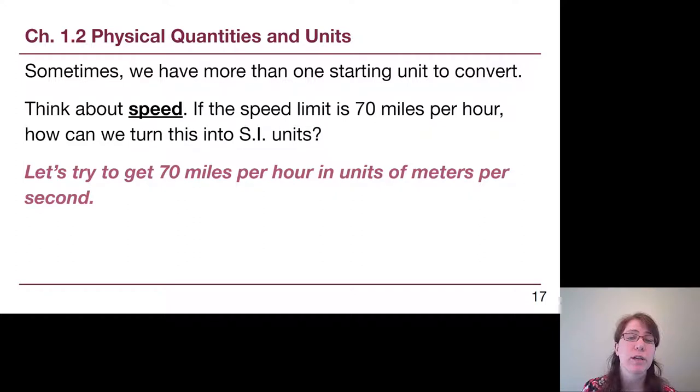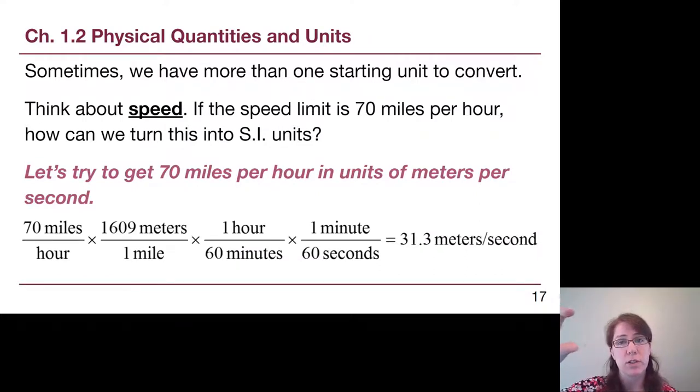The most important thing to point out on this example is that the word per has very specific meaning here. What it means is what we have is a fractional unit. Miles should go on the top of the starting point, but hours should go on the bottom: miles per hour. When we start this unit conversion on the far left, we see that 70 miles is on the top and hours is on the bottom. The most common mistake is students try to just shove miles per hour into the top as a single unit. That word per has that specific meaning of this thing goes on the bottom.